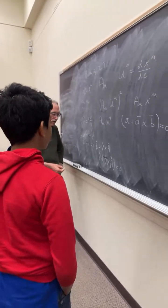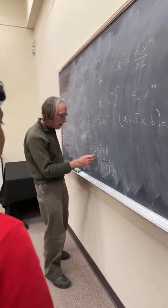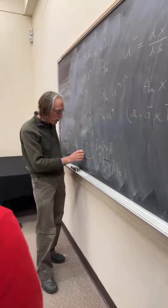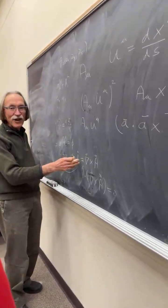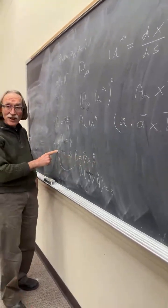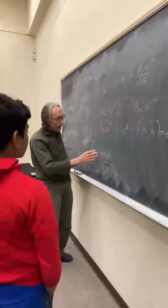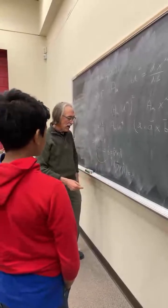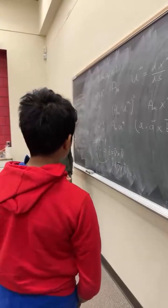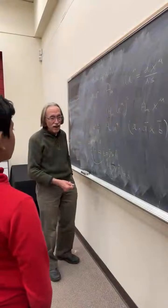And so what you see is by writing this, that this actually solves this equation. If you write B in this way, this is always satisfied, and so you can express B that way, and that is a useful way to do that.